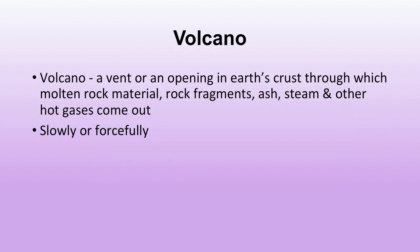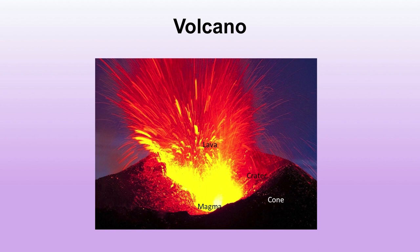Another process that occurs due to folding, faulting and fracturing is a volcano. A volcano is a vent or opening on the earth's surface through which molten rock material, rock fragments, ash, steam, gases and other hot gases come out — slowly or violently. When magma comes out of the earth's surface it is known as lava. When it is inside the earth it is called magma; when it comes out it is called lava.